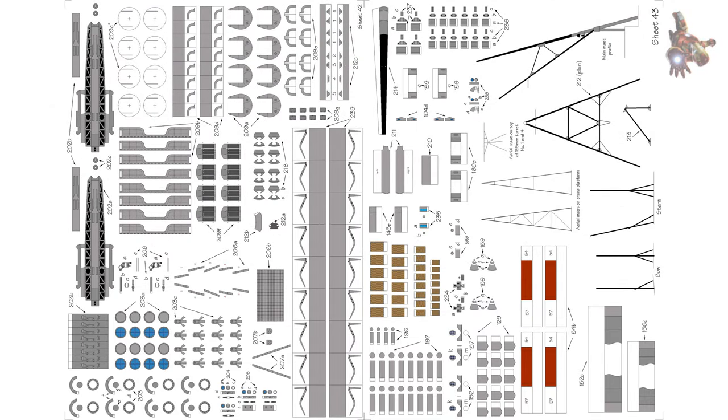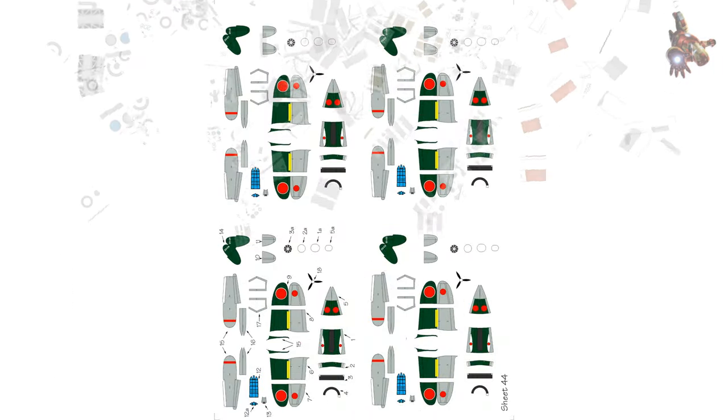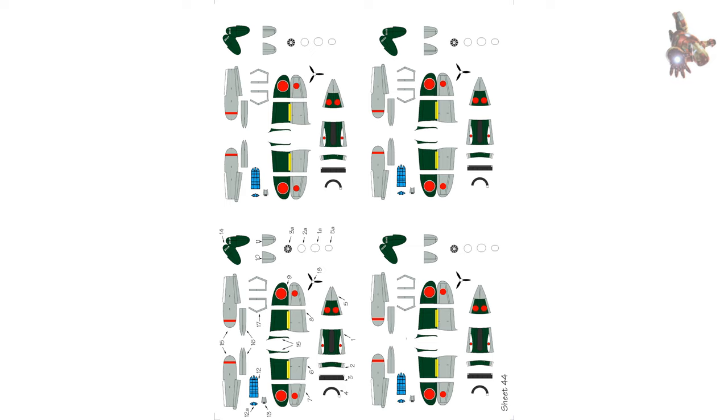The elevation mechanism, parts 218 and 219, enables independent elevation of each barrel. To achieve this, place three tubes 219 inside tube 218, ensuring a snug fit allowing rotation.